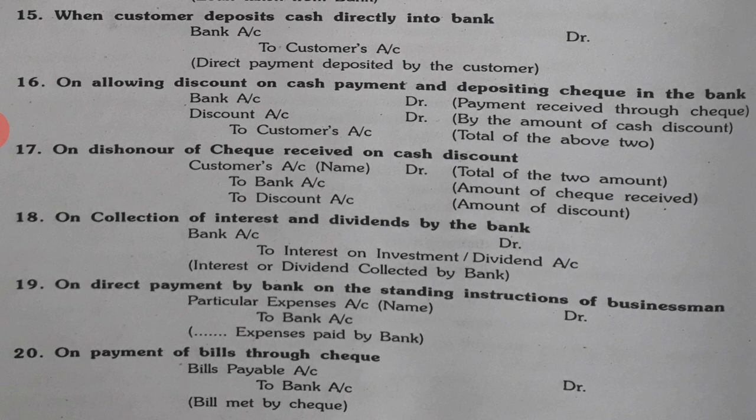If that check is dishonored — meaning the customer took the discount and the check bounced because there was no balance in his account — then the customer's name is debited for the total amount, and the bank account which was earlier debited must be credited. This is the opposite entry of entry 16. So: customer debit, bank credit, discount credit.